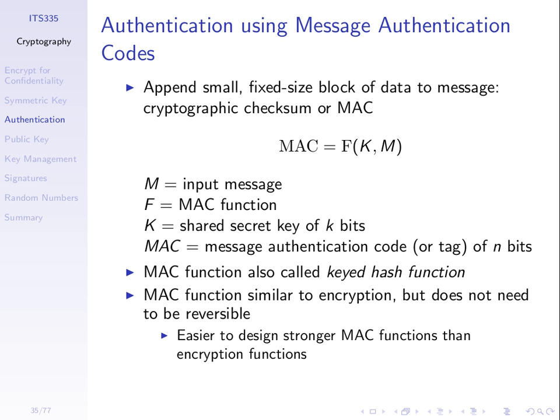A MAC function — F here, C on the next slide — is some algorithm that takes a key and message and produces a usually short, practically unique value. That is, if we change the key, we'll get a different value. If we change the message, we'll get a different value. So if someone tries to pretend to be a user, to get the same MAC they need to know the key and the message. If the message is known, they need to know the key, and if they don't know the key, they cannot generate the MAC value.